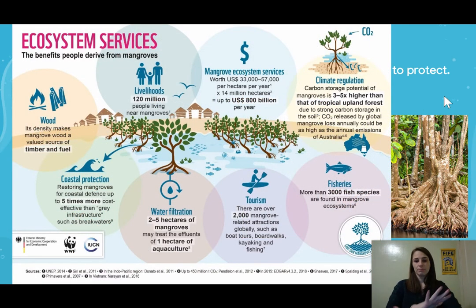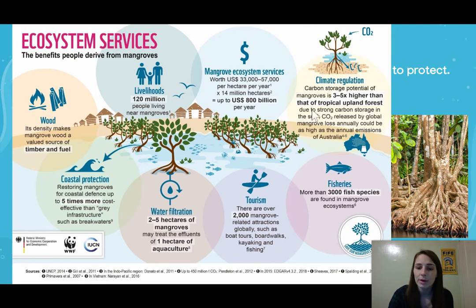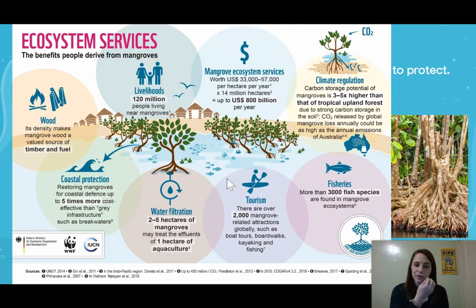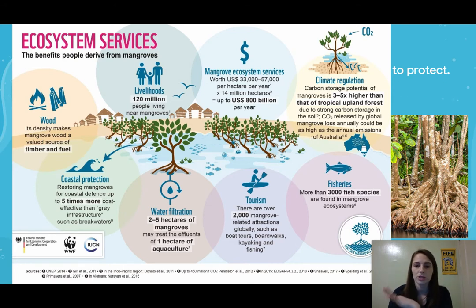This diagram does a great job showing all the different ecosystem services of mangroves. It covers things like wood production, how many people live near them, climate regulation through carbon sequestration, filtration capacity, coastal protection, and tourism activities like boat tours and kayaking. You can pause on this diagram to read through the more in-depth information on each ecosystem service.